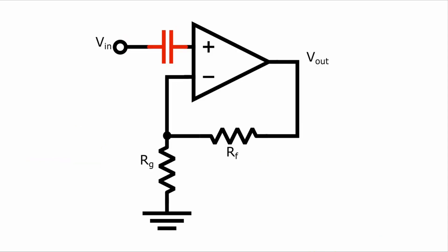Input bias current prevents you from capacitively coupling the input of an op-amp. If you put a capacitor here, you are blocking the input bias current, which will prevent the transistors inside the op-amp from working properly.